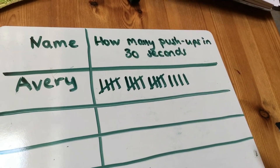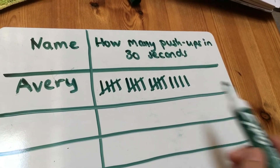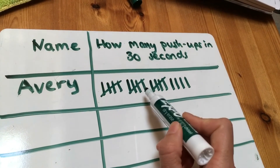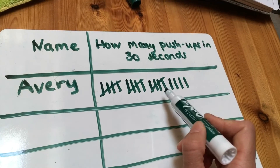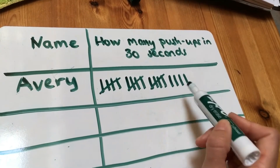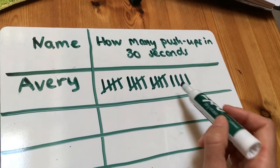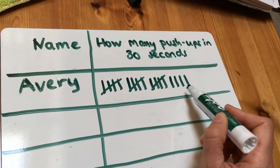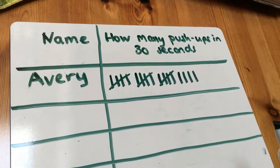Now tallies are great because you can count them in fives. 5, 10, 15, and then you can add on the rest: 16, 17, 18, 19.